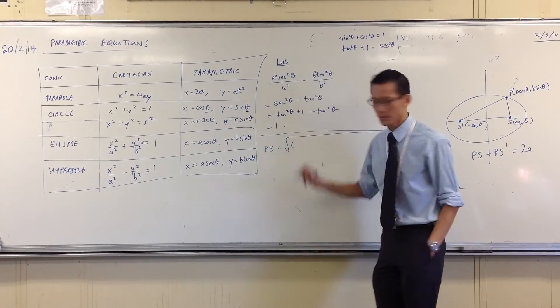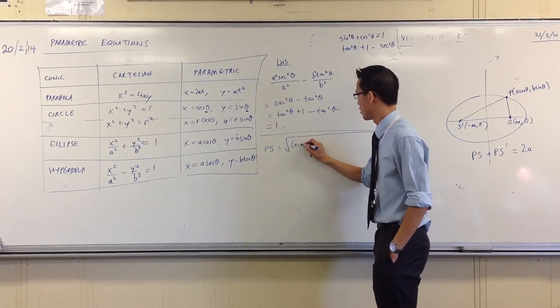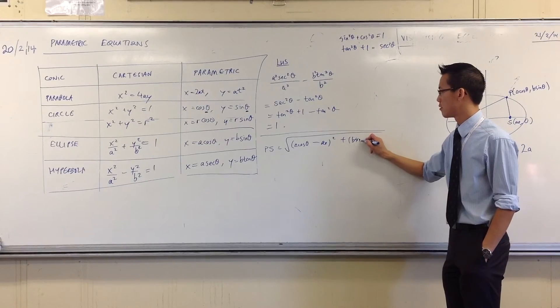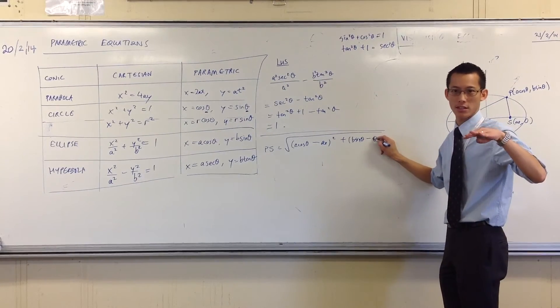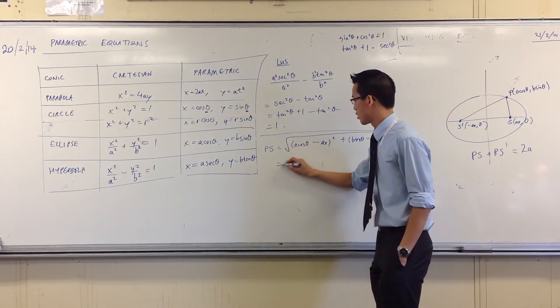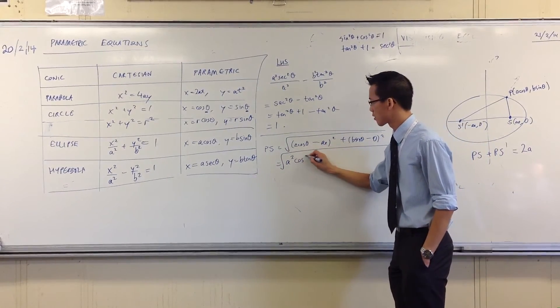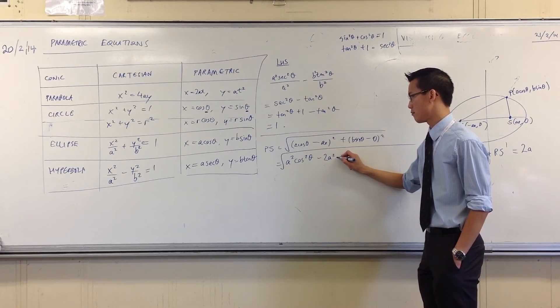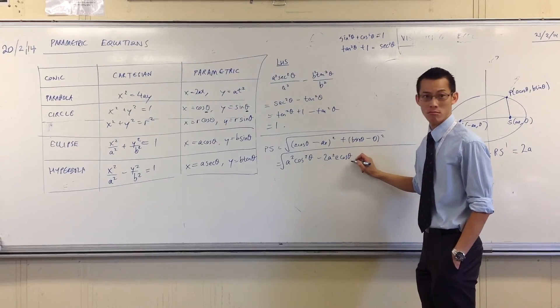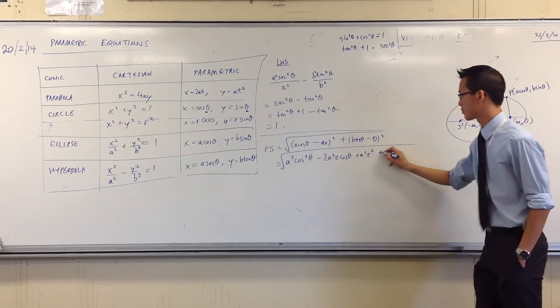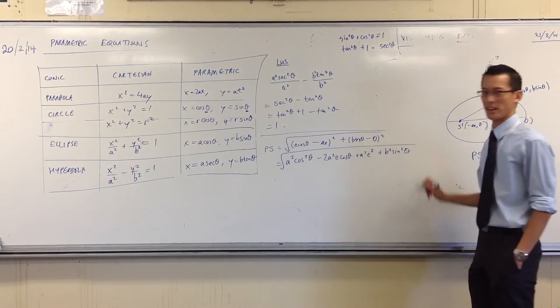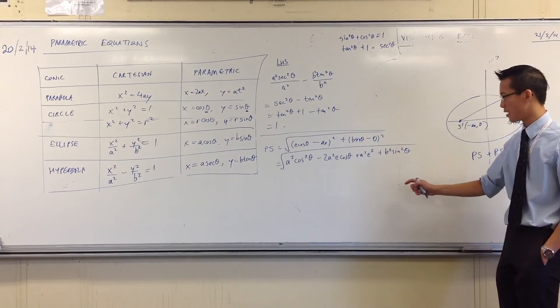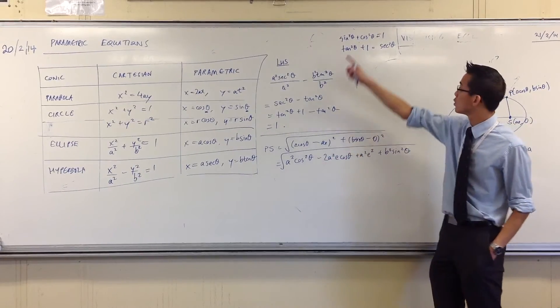I'll do A cos theta, minus AE, squared, plus B sin theta, minus, because I'm on the axis, it's just zero, isn't it? Squared. Now you look at this, you've got square root of A squared cos squared theta, minus 2A squared E cos theta, plus A squared E squared, plus B squared sine squared theta. Now you're like, for real? Look at that thing. That's a mess. It's actually not that bad. Think about it. You've got so many sine squares and cos squares, you're going to use this guy, the Pythagorean identity.